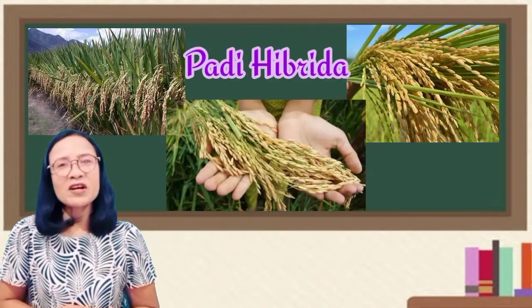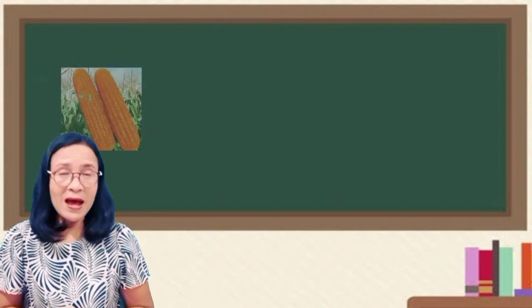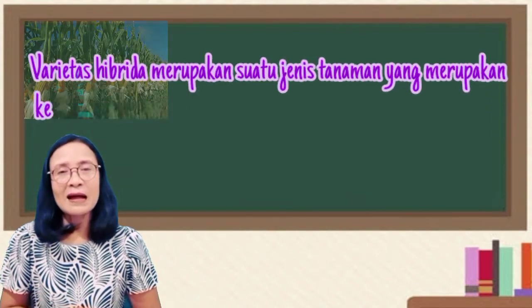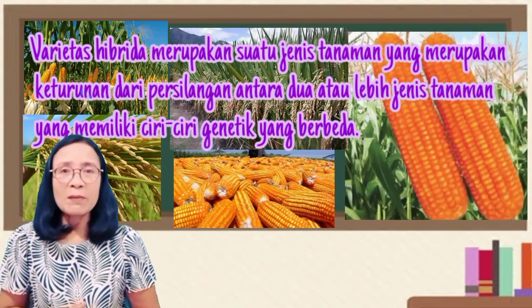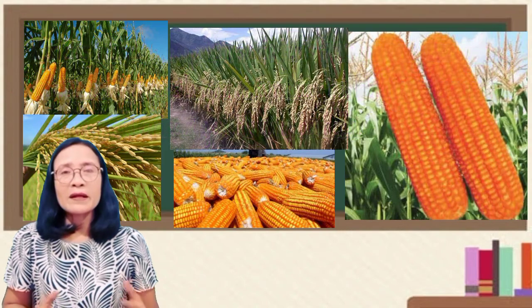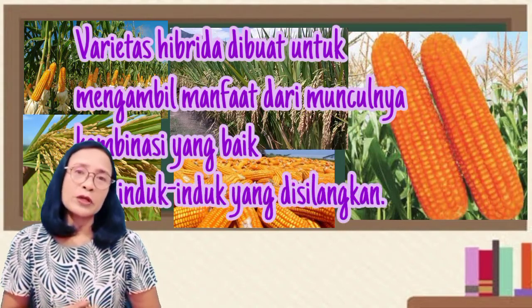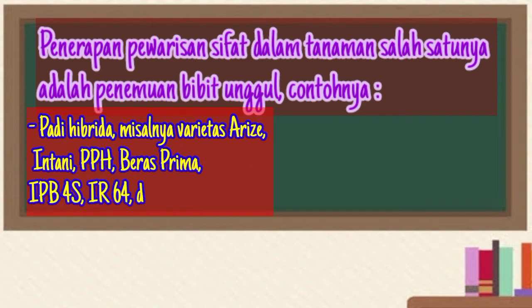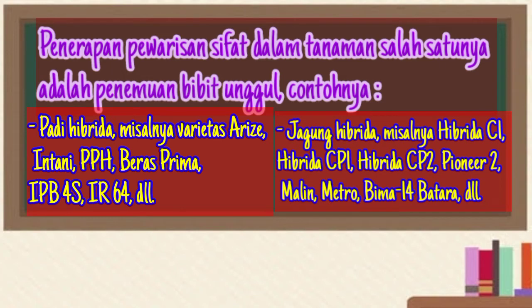Pernahkah kamu mendengar varietas jagung hibrida atau varietas padi hibrida? Varietas hibrida merupakan jenis tanaman hasil persilangan antara dua atau lebih jenis tanaman yang memiliki ciri-ciri genetik berbeda. Varietas ini dibuat untuk mengambil manfaat dari kombinasi yang baik dari induk-induk yang disilangkan. Penerapan pewarisan sifat dalam tanaman salah satunya adalah penemuan bibit unggul, contohnya padi hibrida intani, PPH, beras prima, IPBM4S, dan lain-lain. Sedangkan untuk jagung hibrida, antara lain hibrida C1, hibrida CP1, hibrida CP2, pioner 2, malin, metro, BIM4S, batara, dan lain-lain.